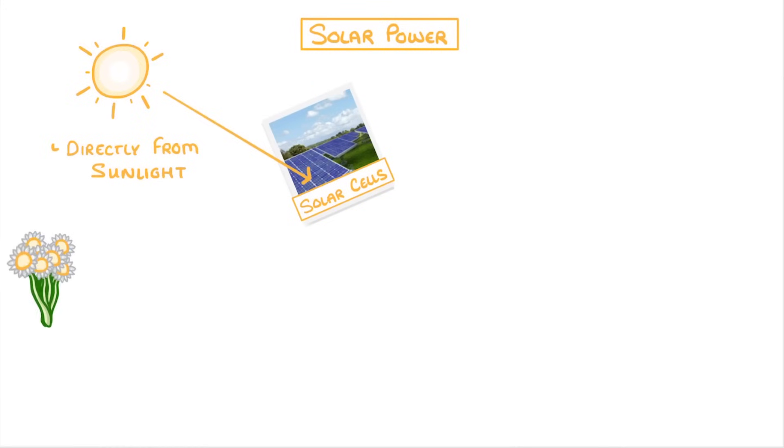Solar power, on the other hand, is generated by solar cells which are often in the form of solar panels. These generate electric currents directly from sunlight, much like plants trap the sun's energy through photosynthesis.